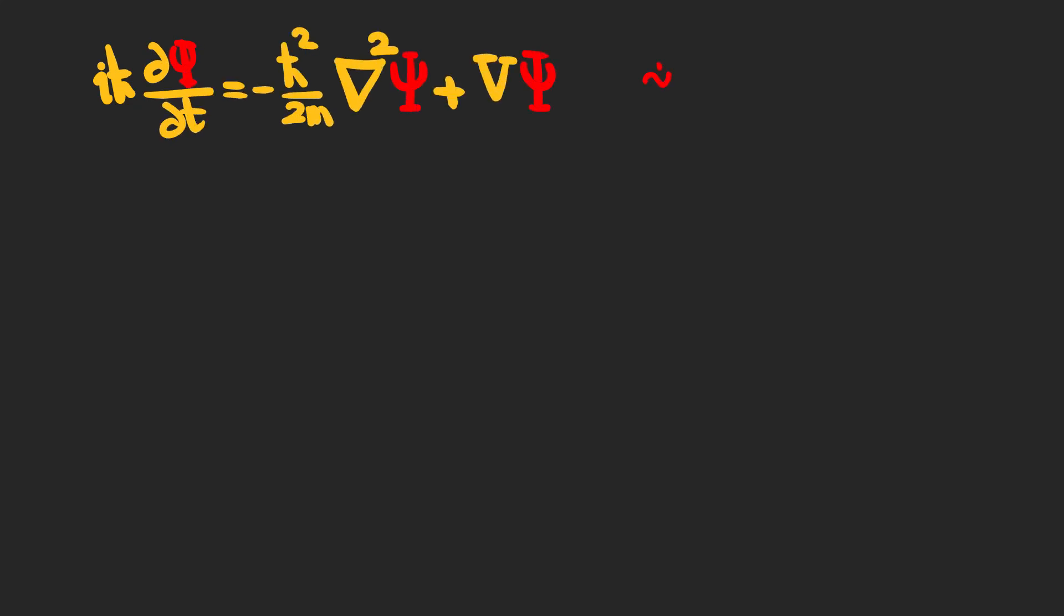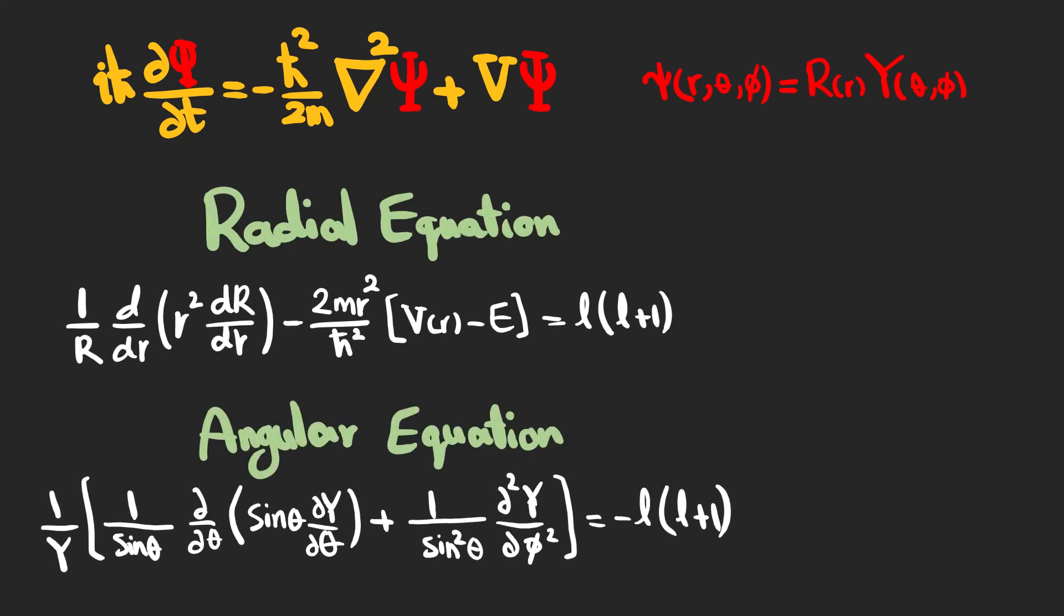When you solve the Schrödinger equation in three dimensions using separation of variables, you get two differential equations which are dependent on either radial or angular part of the wave function. In the previous video, I talked about the angular part which were constructed by Legendre functions. In this video, we are going to see how we can come up with a solution for the radial equation.